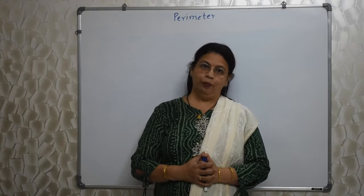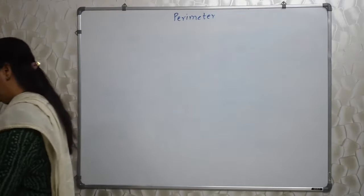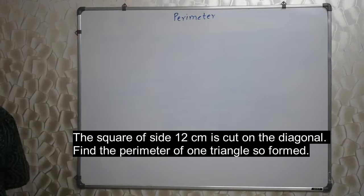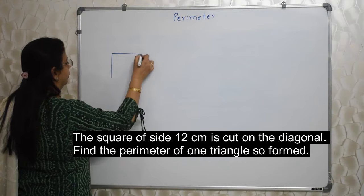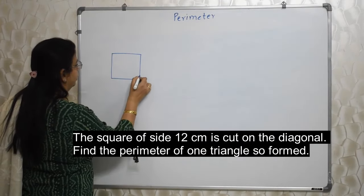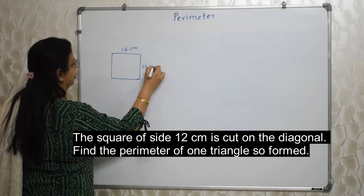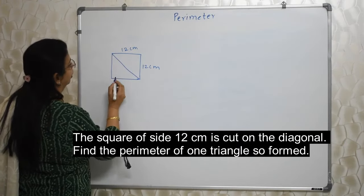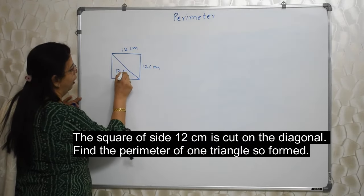Let's go ahead with a few important sums. The first sum: a square of side 12 cm is cut on the diagonal. Find the perimeter of one triangle so formed. If this is a square with side 12 cm, all sides are 12 cm. This is cut here on the diagonal. How much will be the diagonal? The diagonal will be 12 root 2.